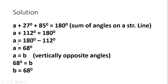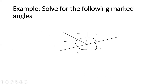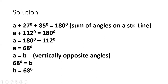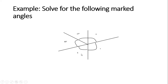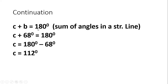So the value of a equals 68 degrees. Now, a and b are facing one another — that means they are vertically opposite angles. Since vertically opposite angles are equal, a equals b, and since a is 68 degrees, b is also 68 degrees. Then, c plus b equals 180 degrees — sum of angles on a straight line. Since b is 68, we get c plus 68 equals 180, so c equals 180 minus 68, giving c equals 112 degrees.